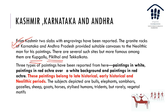From Kashmir to Karnataka to Andhra, we have paintings and engravings. Kashmir has stone slabs with engravings, and the granite rocks of Karnataka and Andhra provided suitable canvases to Neolithic man. Famous sites include Kupgal, Piklihal, and Tekkalkota. Types of paintings include paintings in white, paintings in red ochre over a white background, and paintings in red ochre — belonging to the late historical, early historical, and Neolithic periods. The subjects painted include bulls, elephants, sambars, gazelles, sheep, goats, horses, stylized humans, tridents, and vegetable motifs.